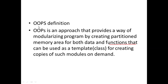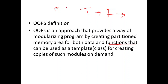Before going to the object-oriented programming language, we have to learn what is procedural-oriented programming. An example of procedural-oriented programming is C. In procedural-oriented programming, there will be some list of instructions for a computer to follow, and similar tasks are grouped to form a function. There is a drawback: the data is publicly available, so there is no data privacy in procedural-oriented programming.